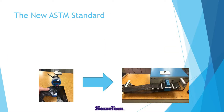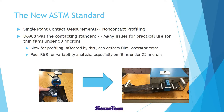Now comparing the new standard versus the old standard — we're looking at single-point contact measurements versus non-contact profiling. D6988 is the contacting standard, but it has many practical issues for films under 50 microns thick. It's slow for profiling, affected by dirt, can deform film, and there are operator error issues in terms of how hard they press. R&R studies show that for variability analysis it has really poor R&R, especially for films under 25 microns.